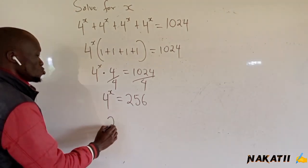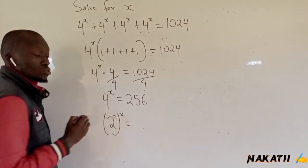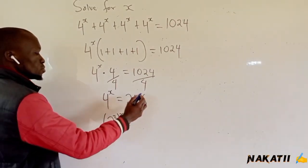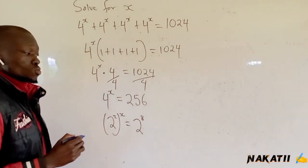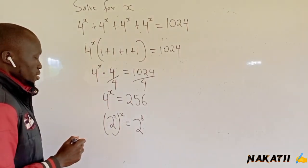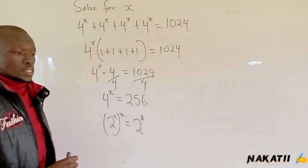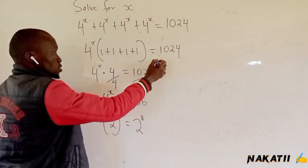This can be written as 2 raised to 2x equals 2 raised to 8. 2 raised to 8 is 256. Therefore, using laws of indices, you can multiply this power.